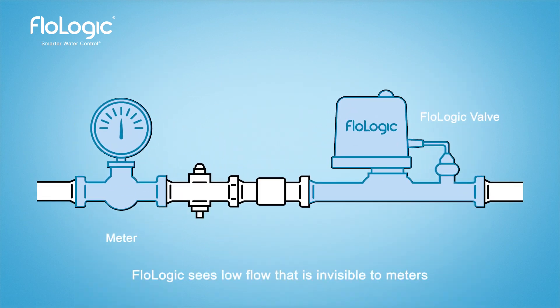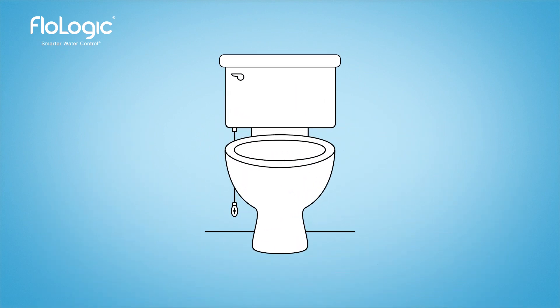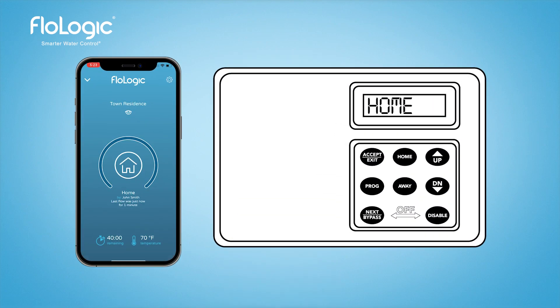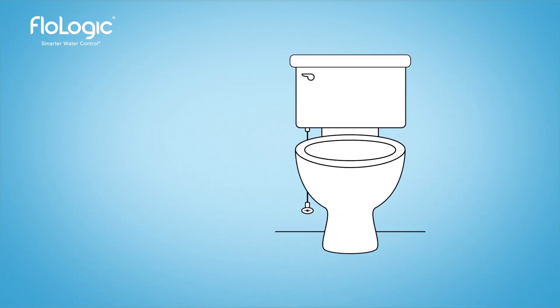Beware that water meters cannot see low-level flow, while FlowLogic monitors real-time flow as low as a half ounce per minute depending on the flow sensitivity setting. Use the process of elimination to find hidden leaks. Toilets are the most common source — start by shutting off all toilets at the angle stop valve located below the toilet. With all toilets turned off, if flow stops, you've found the culprit. You can determine which toilet has the leak as you hear water flow into the tank once its valve is turned back on and you'll see flow indication on the control panel or app.